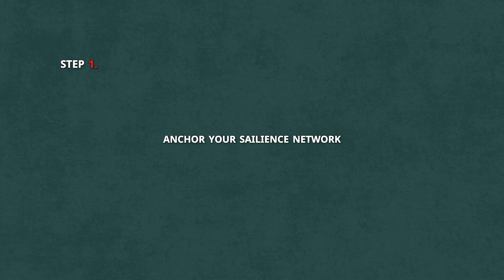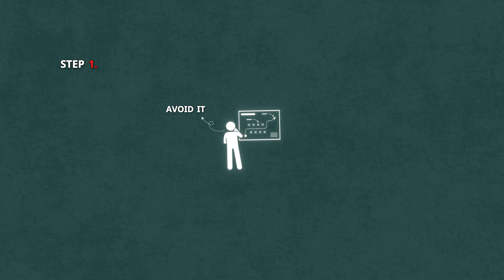Step one, anchor your salience network. Write your goal somewhere you can't avoid it. On your lock screen, your mirror, even sticky notes around your desk. The more your brain sees it, the more it flags it as important.